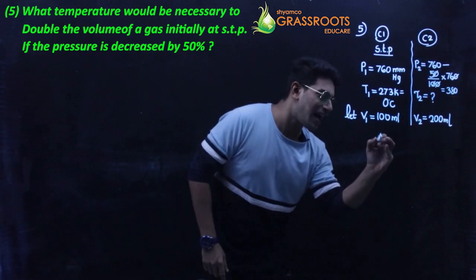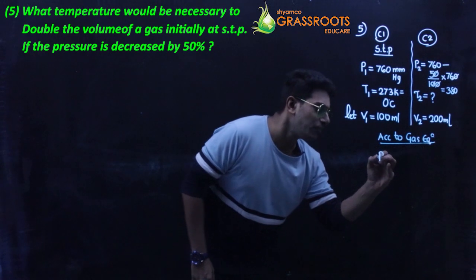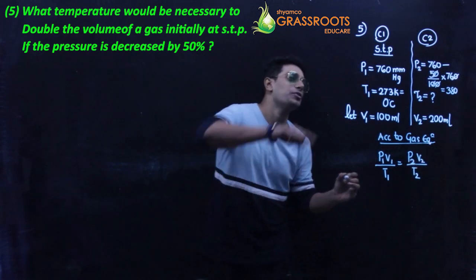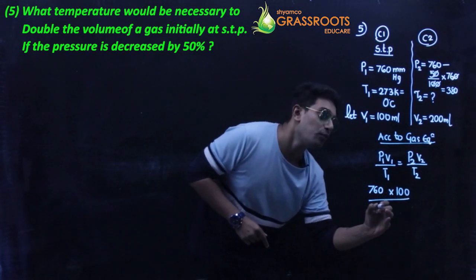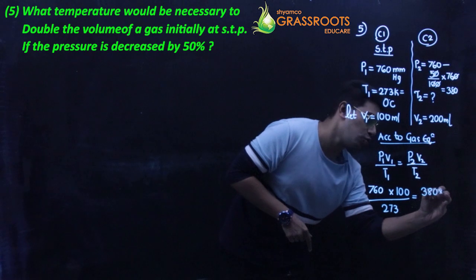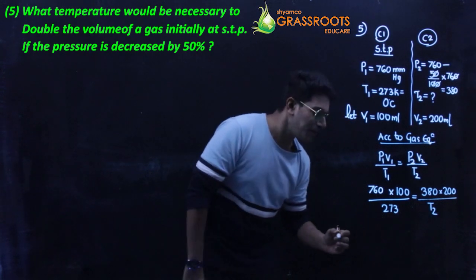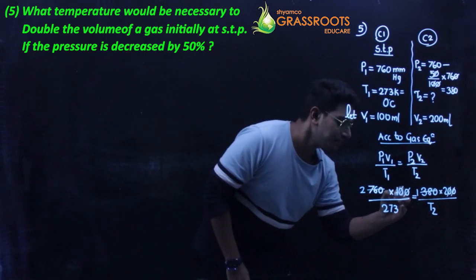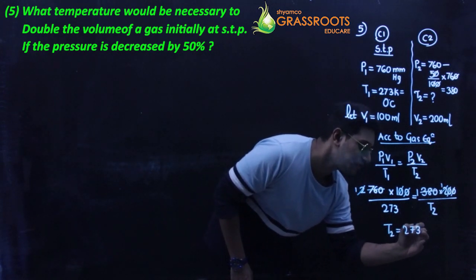Using the combined gas equation: P1V1/T1 = P2V2/T2. Substituting: (760 × 100)/273 = (380 × 200)/T2. After cancellation, T2 = 273 Kelvin, which is 0°C.